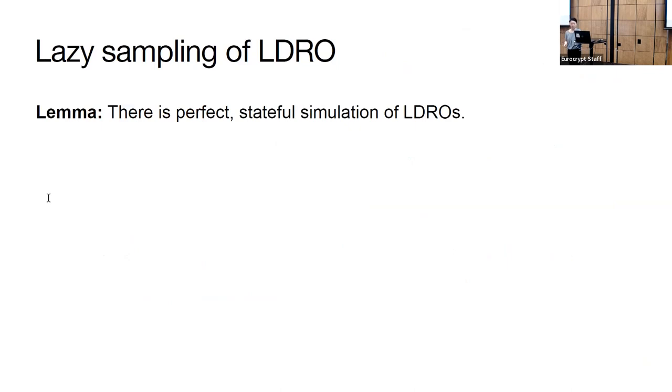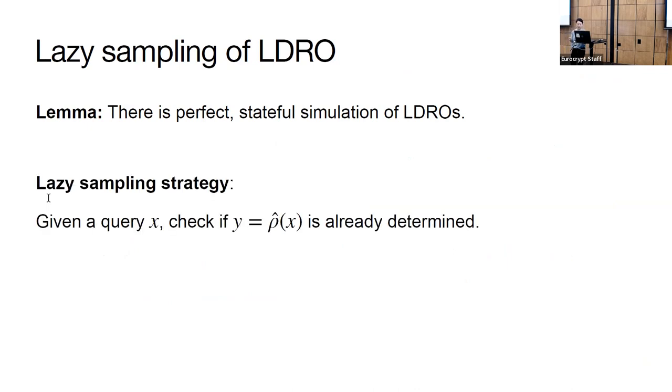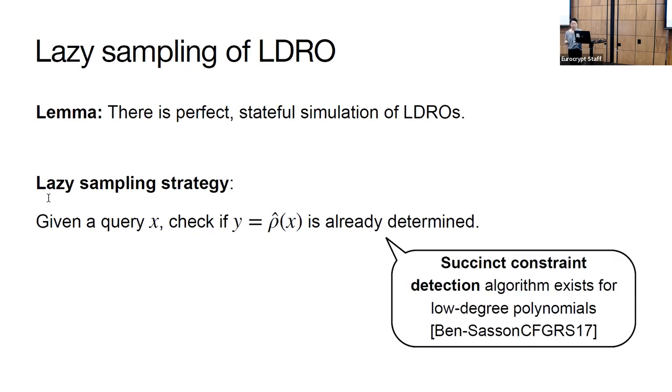There is perfect, stateful simulation of low-degree random oracles, and the procedure works as follows. Given a query x, we want to check if y, the output of the oracle at x, is already determined. Suppose that we lazily sample the low-degree oracle's evaluation table. The evaluation table should also faithfully represent points on a low-degree polynomial. Hence, given a set of query-answer pairs, the value of y might already be determined, just because of the structure of the oracle. Luckily, there's a non-trivial polynomial time algorithm that checks if y is determined, given previously seen oracle queries. This algorithm is called succinct constraint detection, and is by Ben-Sasson et al. from 2017. Then, using this algorithm, if y is determined, we'll use y as the query answer for x. If not, then we can uniformly sample the value of y from the field.